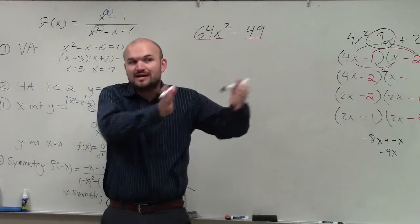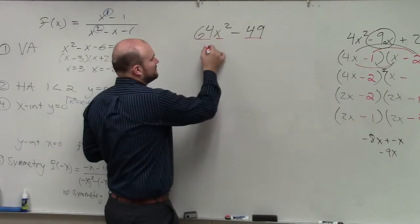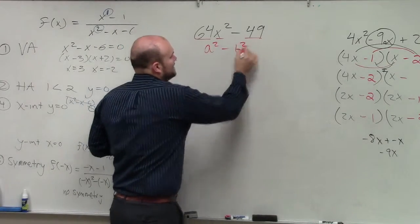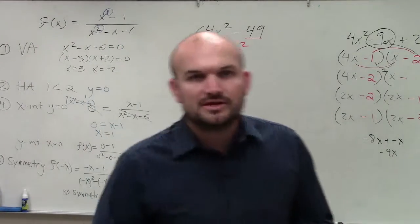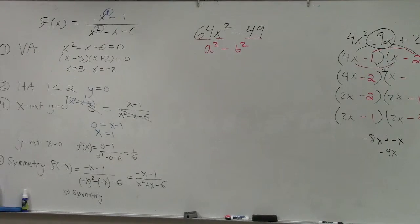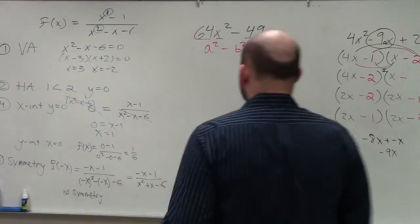Whenever we have a squared number subtracted from a squared number, I want you to think of a squared minus b squared. Because when we have a squared minus b squared, we know we can apply the difference of two squares.